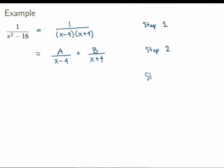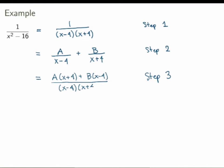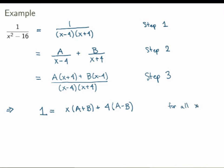Step three is to solve for the unknowns. You want the two expressions to be equal, so a and b are not arbitrary — you need to fix them so the two sides are equal. Put everything on a common denominator: a times x plus 4 plus b times x minus 4, all over x minus 4 times x plus 4. The only way this equals the original for arbitrary x is if the numerators are equal. Rearranging: 1 equals x times (a plus b) plus 4 times (a minus b). These two polynomials must be identically equal for all x.